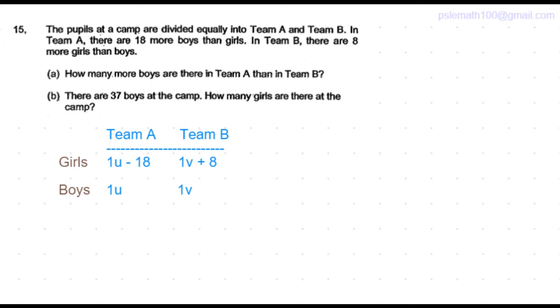Let's represent the number of boys in Team B as 1v. So the number of girls will be 1v plus 8.